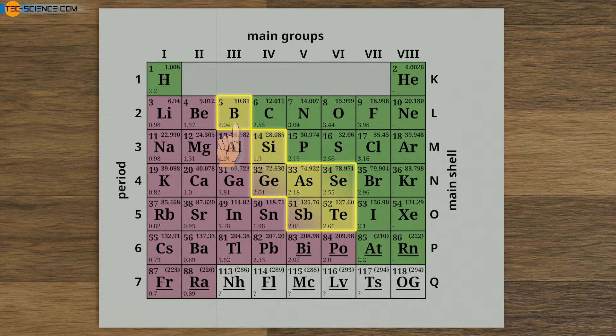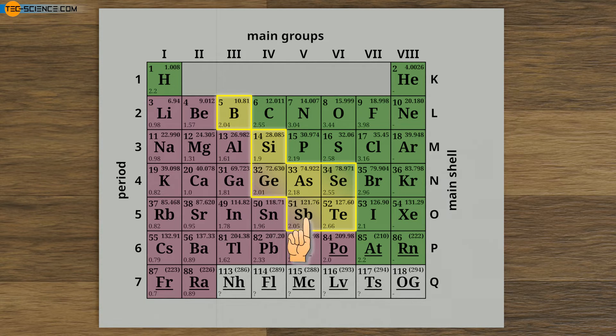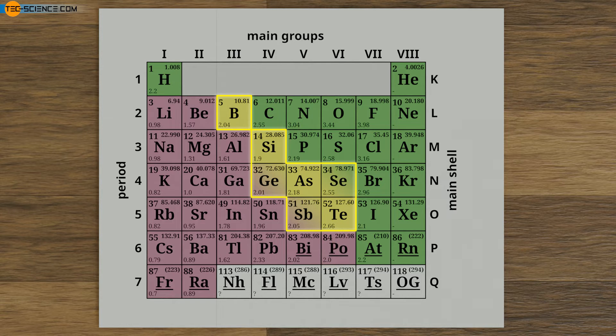Semi-metals include boron, silicon, germanium, arsenic, antimony, selenium, and tellurium. These elements are marked yellow in the periodic table.